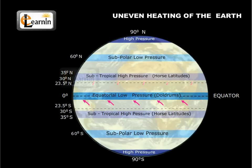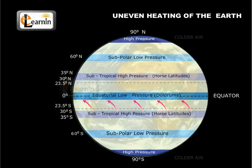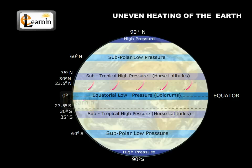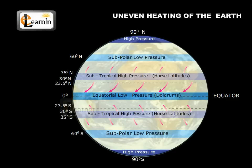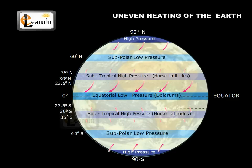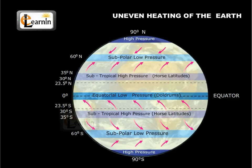Air is colder at the poles than at the latitudes about 60 degrees. Therefore, the warm air at these latitudes rises up. Cold air from the poles rushes in. Wind circulation is set up in this way. The winds would flow in a north-south direction or in a south-to-north direction.